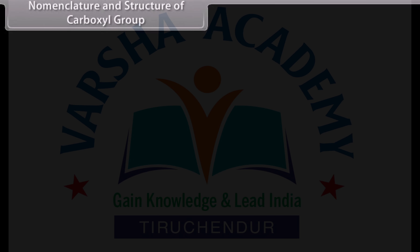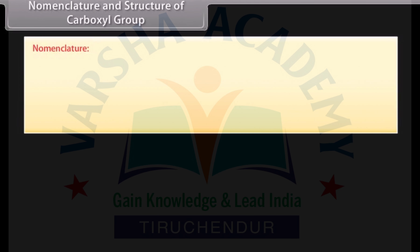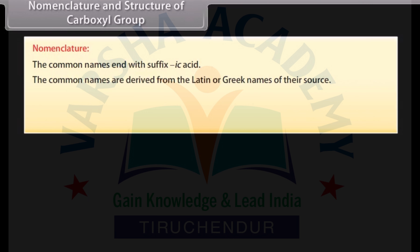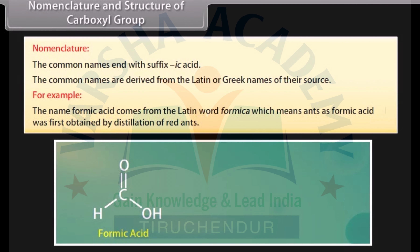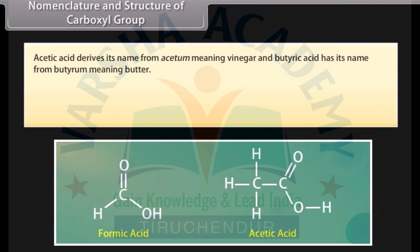Nomenclature: the common names end with the suffix '-ic acid'. The common names are derived from the Latin or Greek names of their source. For example, the name formic acid comes from the Latin word 'formica', meaning ants, as formic acid was first obtained by distillation of red ants. Acetic acid derives its name from 'acetum', meaning vinegar, and butyric acid has its name from 'butyrum', meaning butter.